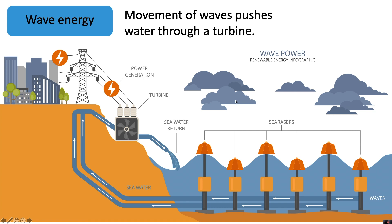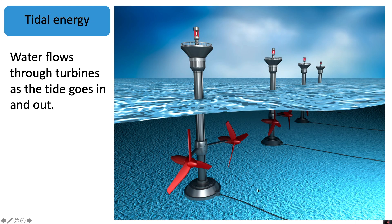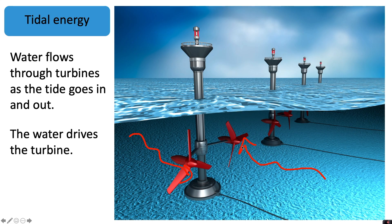If it is a still sea, you won't be generating any electricity. However, another renewable source that involves seawater is tidal energy. In tidal energy, water flows through turbines as the tide goes in and out. The turbines are under the water and connected to a generator. As the water flows in, it turns the turbine to generate electricity as the tide comes in, and again as the tide goes out, turning the turbines and generating electricity. It is the water that drives the turbine, and this is very reliable as tides are guaranteed.